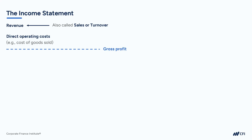Whatever remains as gross profit can be used by the company to cover other indirect operating costs, interest costs, the costs related to taxes, and so on.